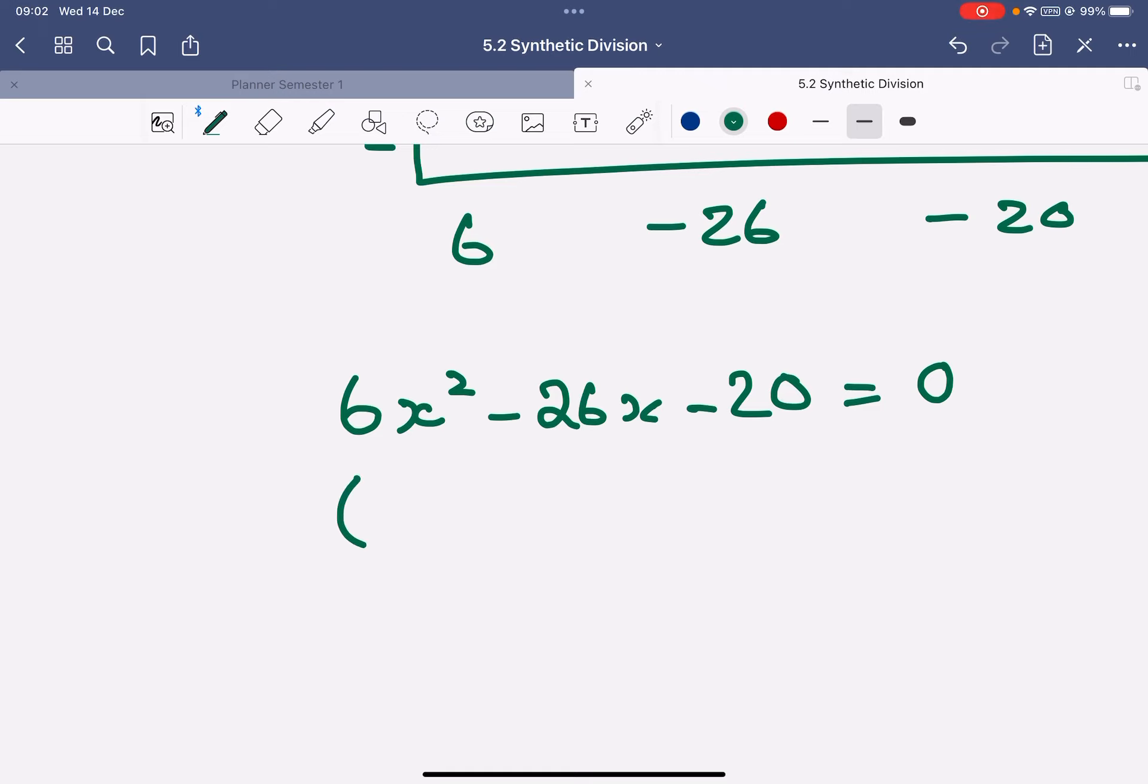So when I do that, and you can check this however you like, but it factorizes neatly to give me 3x plus 2 and x minus 5 equals 0. So from the first bracket, x equals negative 2 over 3. From the second bracket, x equals 5.